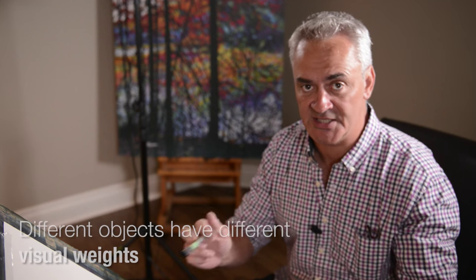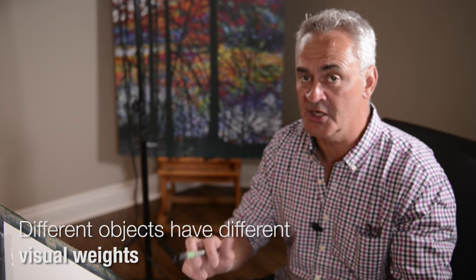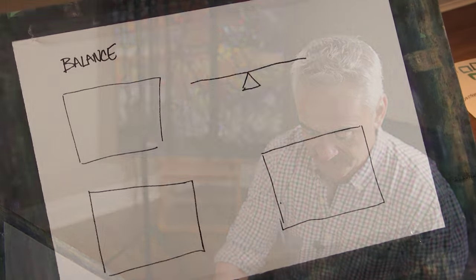Within the four corners of our painting, we need it to be balanced. Objects within our painting have a visual weight and we have to play these things off against each other so that our painting appears in balance. So if we go down to my page, I'll show you what I'm talking about here.